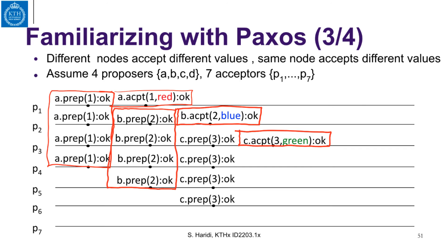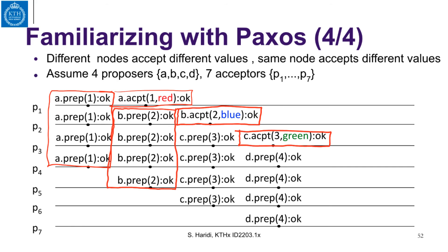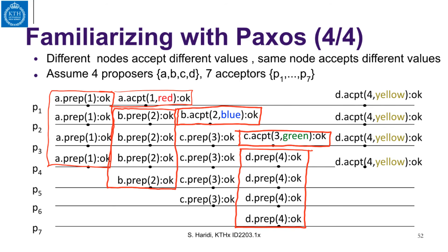We now have three different acceptors accepting different values. Then proposer D arrives, and the acceptors accept proposer D's prepare at round 4. D moves to the accept phase, has the highest proposal number, ensures a majority, and the yellow value becomes the chosen value. You can see that different acceptors accepted different values — yellow, green, blue, and red — and the same acceptor can accept different values as long as each new value carries a higher proposal number. For example, P2 accepted blue and then accepted yellow.